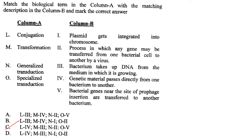Match biological terms with descriptions. Conjugation: genetic material passed directly from one bacterium to another — L4. Transformation: bacterium takes up DNA from the medium — M3. Generalized transduction: any gene may be transferred by a virus — N2. Specialized transduction: bacterial genes near the prophage insertion site are transferred — O5. Answer is option C.